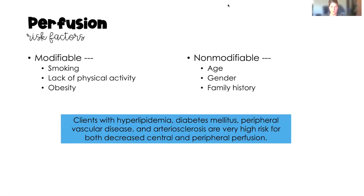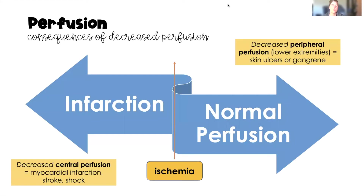Clients who have hyperlipidemia, diabetes mellitus type 1 or type 2, peripheral vascular disease, and arteriosclerosis are also at very high risk for both altered central and altered peripheral perfusion.